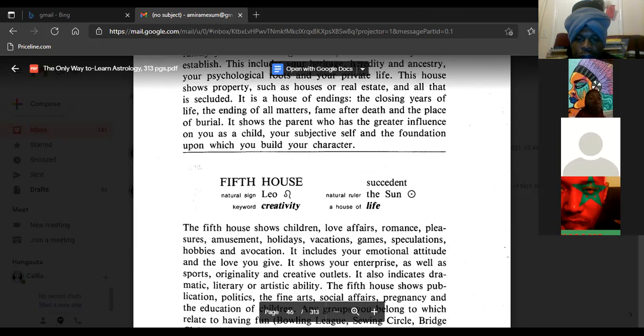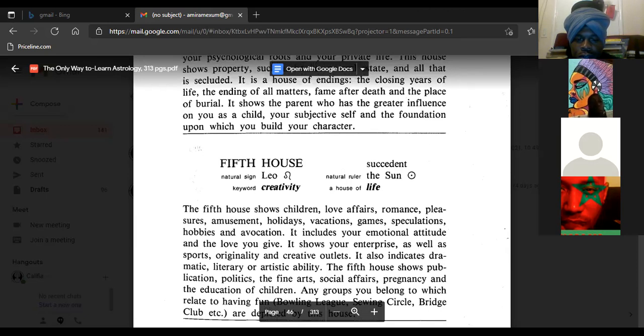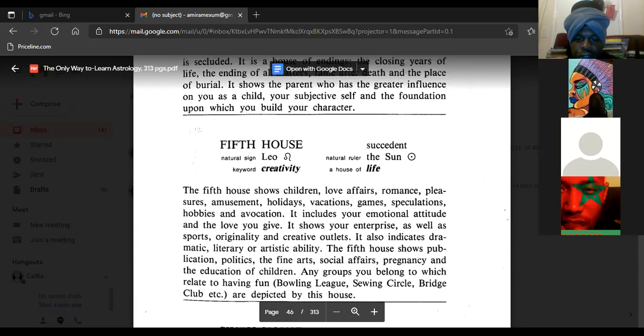Fifth house, natural sign Leo, keyword creativity, succedent, natural ruler the Sun, a house of life. The fifth house shows children, love affairs, romance, pleasures, amusement, holidays, vacations, games, speculations, hobbies, and avocations. It includes your emotional attitude and the love you give. It shows your enterprise as well as sports, originality, and creative outlets. It also indicates dramatic, literary, or artistic ability, publication, politics, the fine arts, social affairs, pregnancy and education of children.